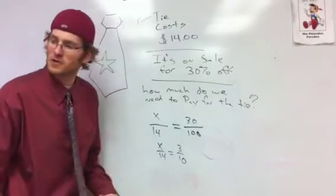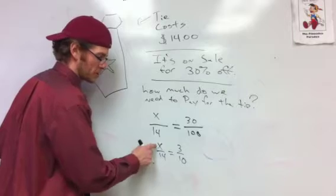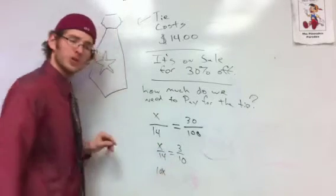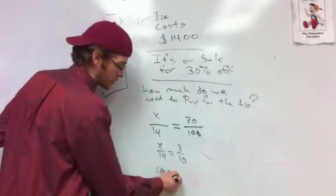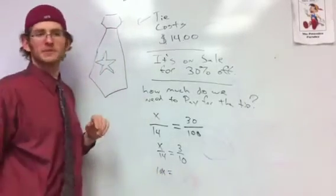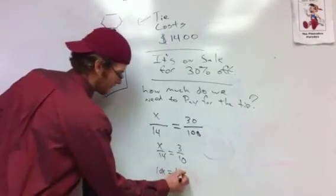Cool. Now let's do some cross multiplication, right? Not cross cancelling, cross multiplication. We have X times 10, which equals 10X equal, am I still on camera? 10X equals, what's 14 times 3? Ladasha? 42. 42.